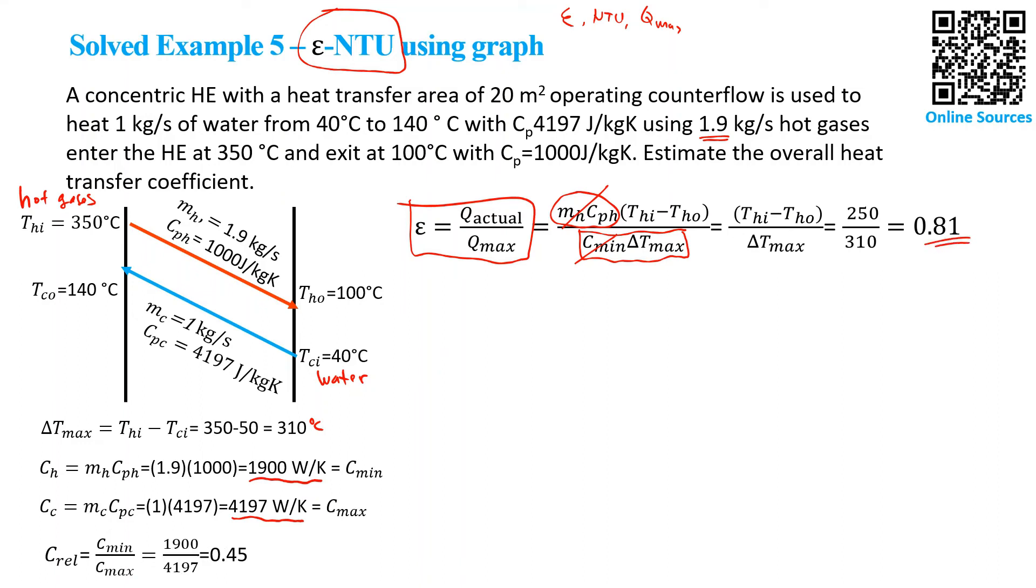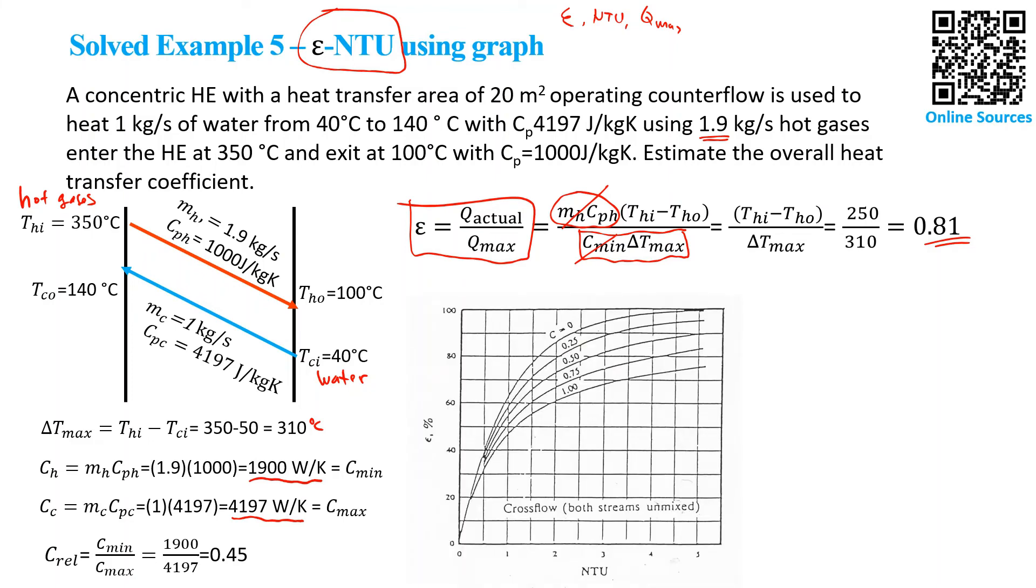Next, we need to find NTU, and then we will use the graph. This is the graph for the corresponding type of heat exchanger. This is supposed to be cross flow heat exchanger, and here I use the one with both streams unmixed. Since there is no clear indication of stream mixing, you can use the other one as well.